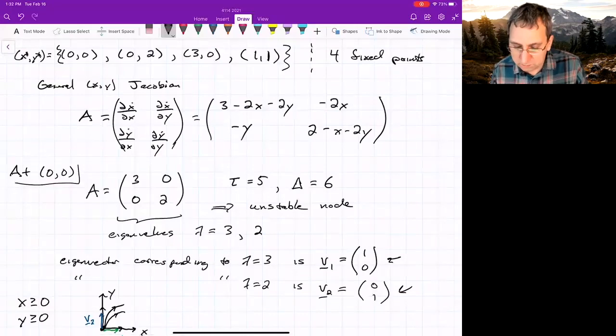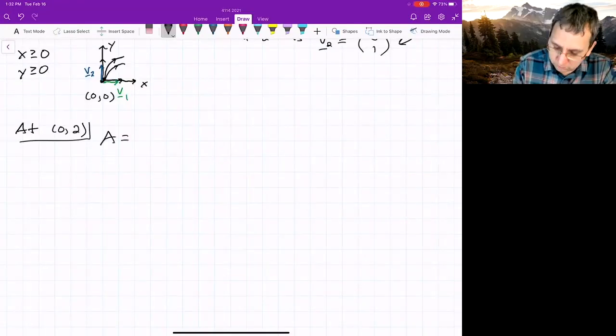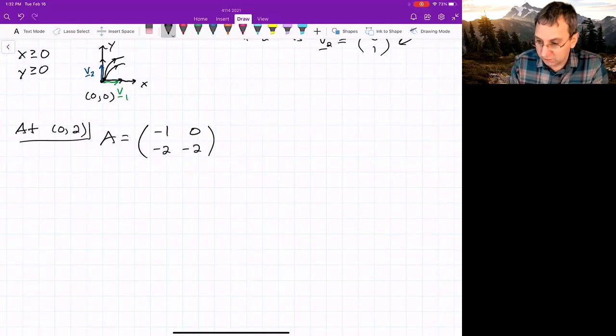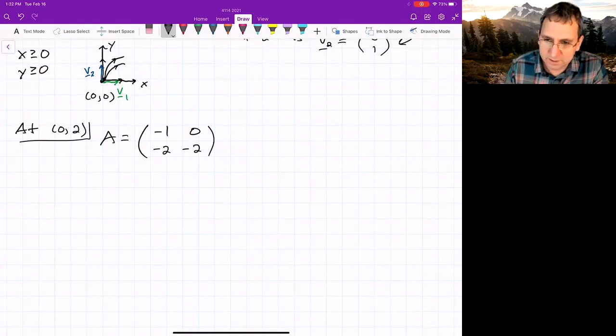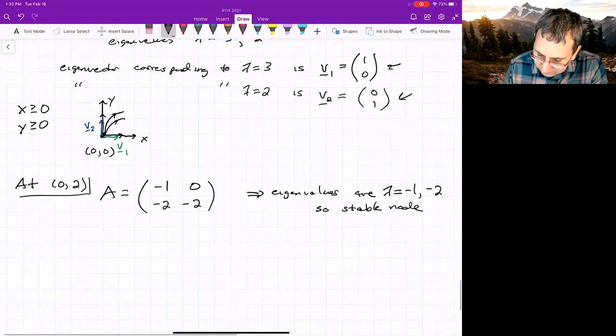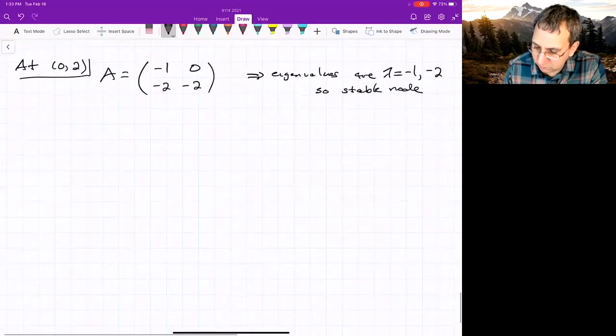What were the other fixed points? Let me sneak up here. We could look at (0,2), A equals (-1, 0, -2, -2). Now we can just look at the eigenvalues. We don't need to do the trace stuff unless you really want to. But if you look at eigenvalues, you'll get lambda is -1 and -2. So that's a stable node. So we have an unstable node and a stable node so far.